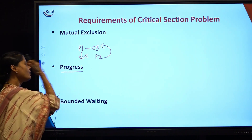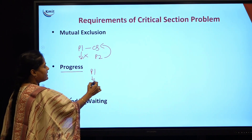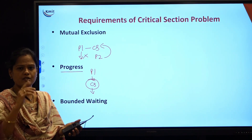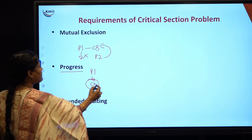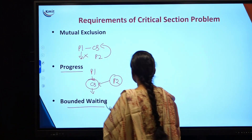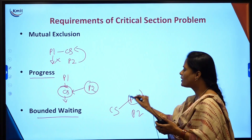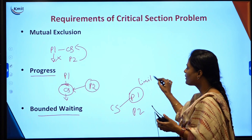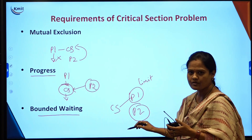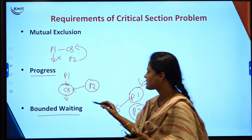Coming to progress: P1 has entered the critical section, done its work, and come out. When the critical section is empty and no process is present, the chance will be given to some other process to enter. You should not make another process wait for an indefinite amount of time. Coming to bounded waiting: when you have a critical section and two processes P1 and P2, the CPU should not always give only P1 the chance to enter. There should be a limit on the number of times a particular process enters the critical section when a request has been made by some other process. Since P2 has made a request, there should be a limit on how many times P1 can enter — that is your bounded waiting.